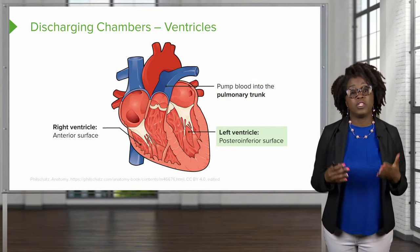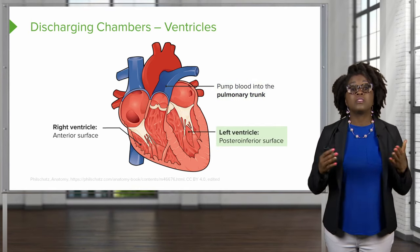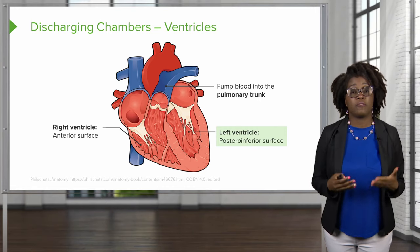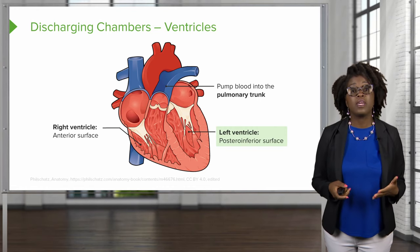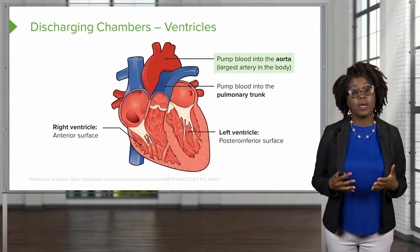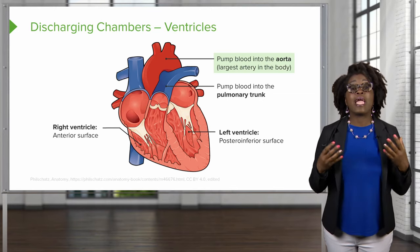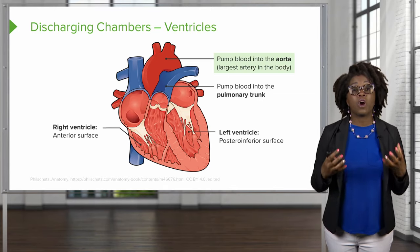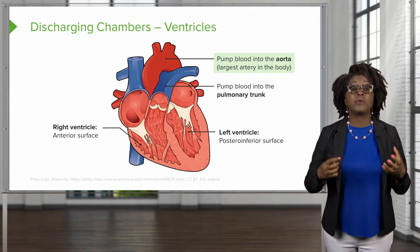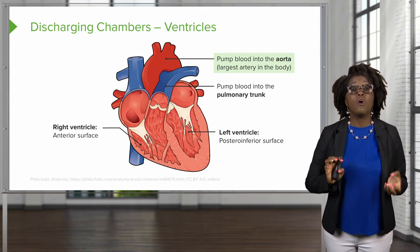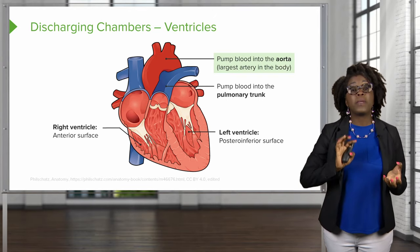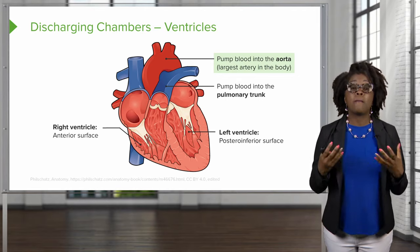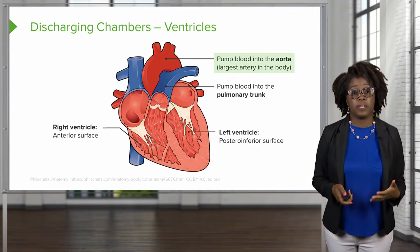The left ventricle is located on the posterior inferior surface of the heart and pumps blood into the aorta. The aorta is the largest artery in the body and is responsible for pumping blood to the rest of the body's tissues by way of the systemic circuit.